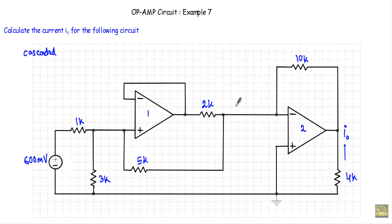Now let me show you the circuit solution. To calculate the output current I₀, you first need to know the voltage at the output terminal, which I will denote as V₀. Once I know the value of V₀, I will simply apply Ohm's law to calculate the current through the 4kΩ resistor.